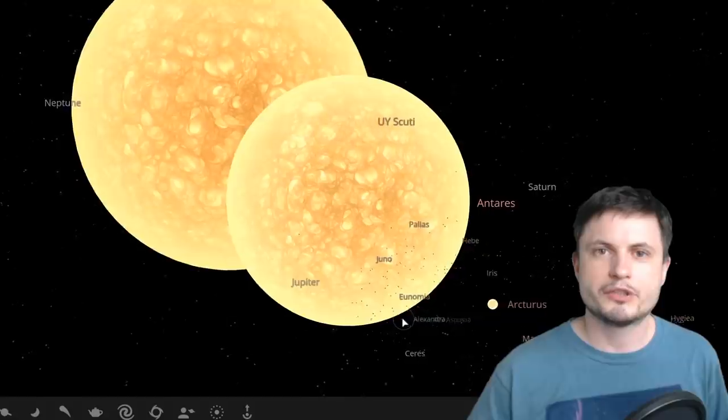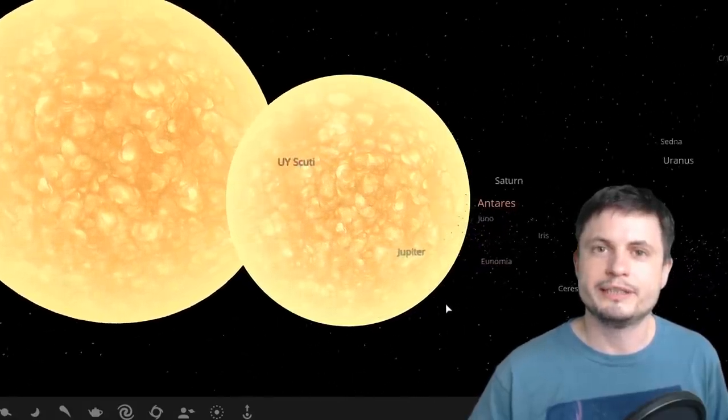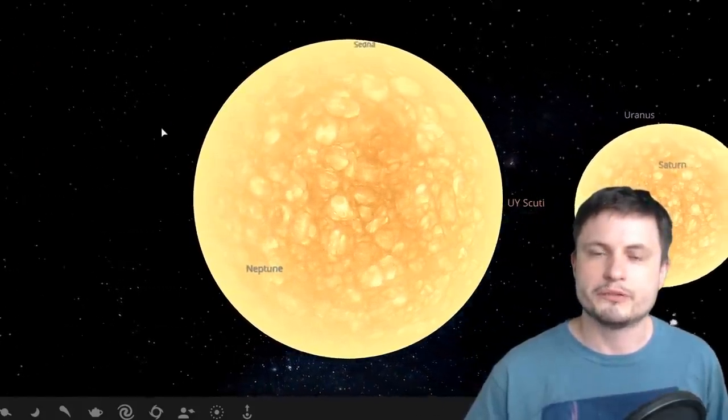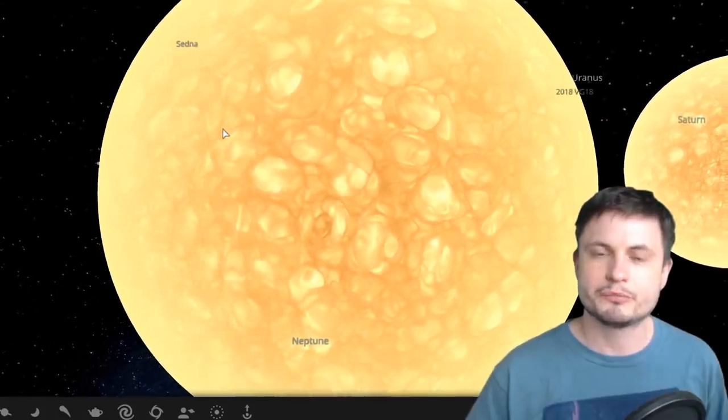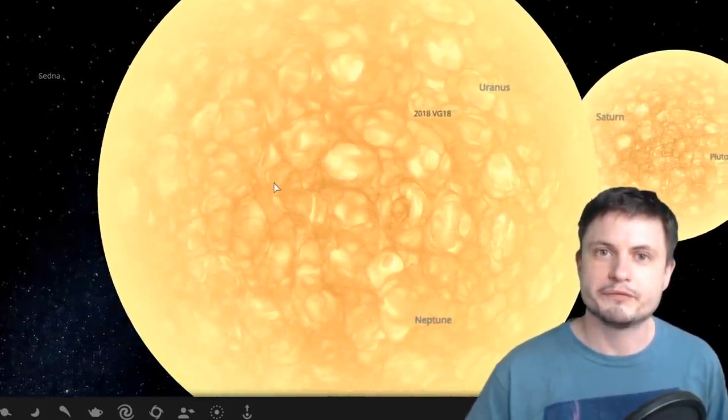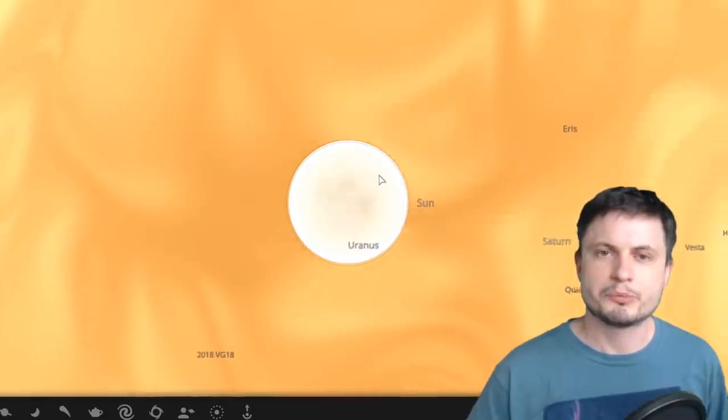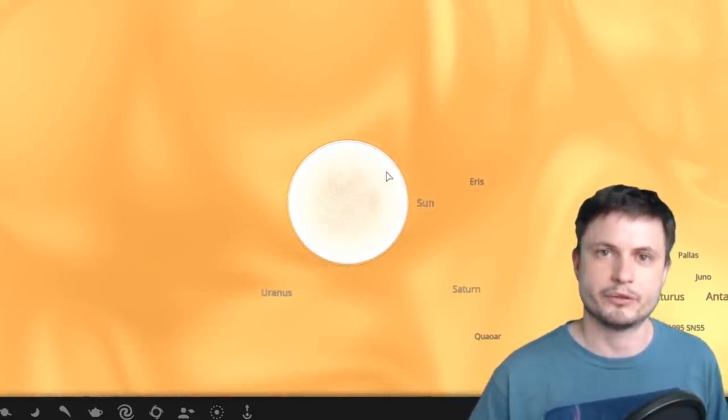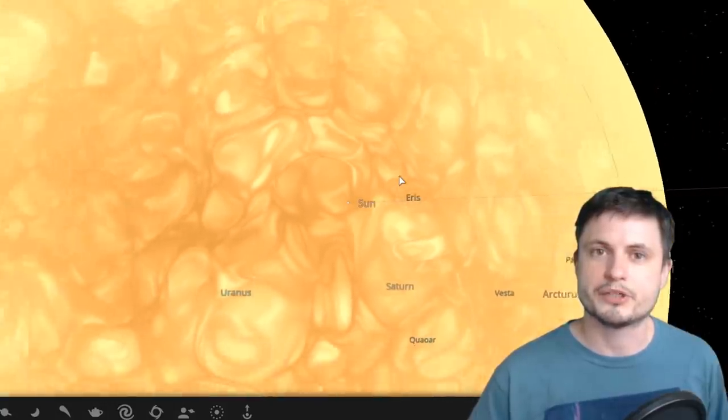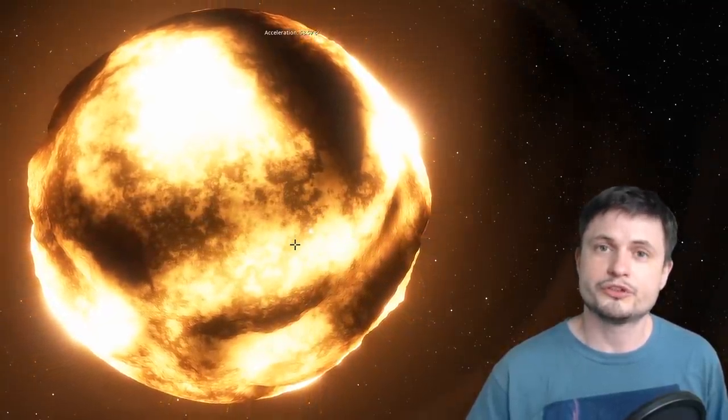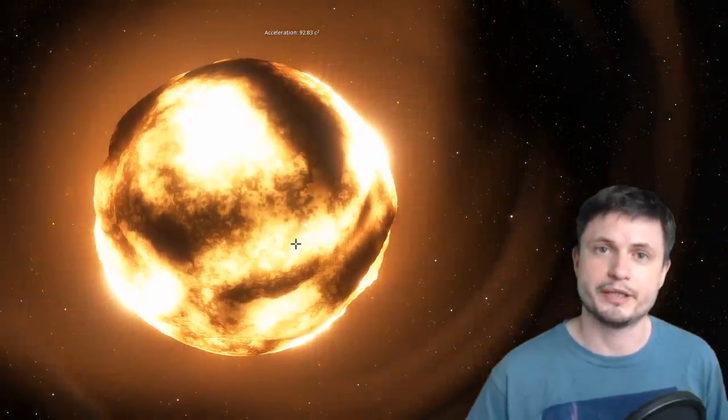This is how we've discovered the size of this object, UY Scuti, and also some of the other stars as well. But unfortunately, this technique was not perfect. Because what we didn't really consider is that we measured the distance to this object incorrectly. We overestimated how far away it was. The original measurement of distance for UY Scuti determined that this object was about 1700 times the radius of the sun, but also that the distance to this object was about 9500 light years away from planet earth.